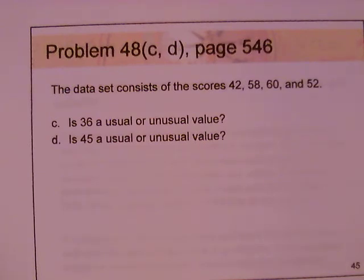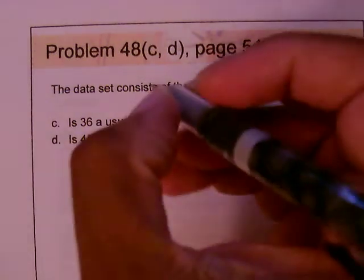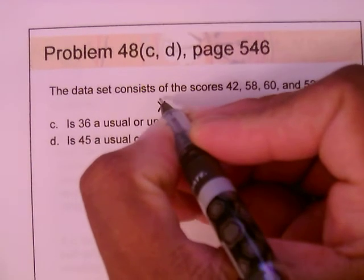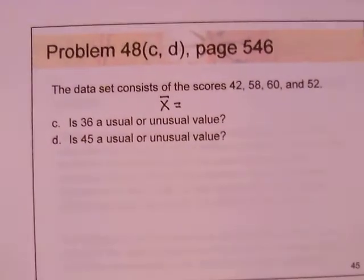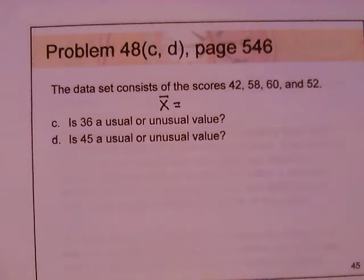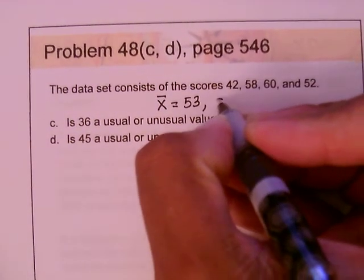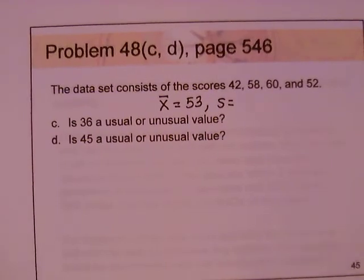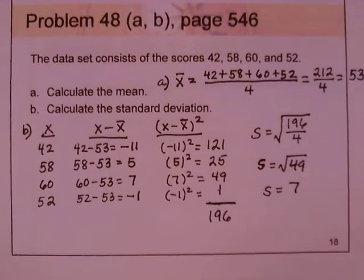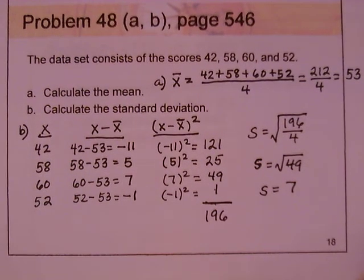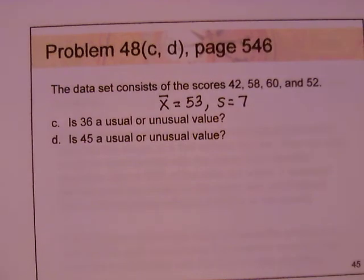In part C, is 36 a usual or unusual value? We look at the mean of 53 and standard deviation of 7 from the previous video. Using Z equals X minus X-bar divided by S, we get 36 minus 53 divided by 7, which is negative 17 divided by 7, giving us approximately negative 2.43. Since negative 2.43 is less than negative 2, 36 is an unusual value.